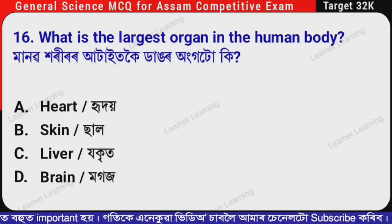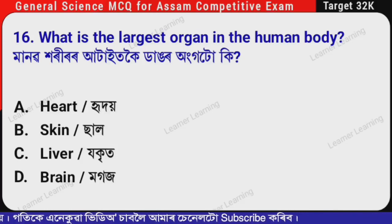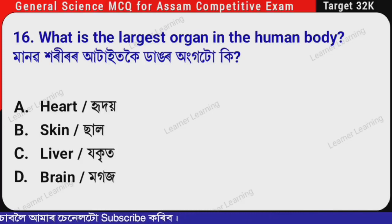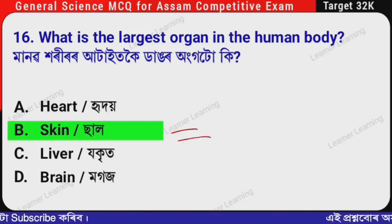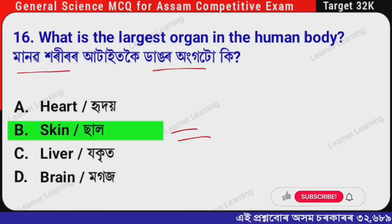Next question: What is the largest organ in the human body? (Assamese: Manophori rar attack kooyi dangor ongota ki?) The correct option is Option B — Skin (sal). The skin is the largest organ in the human body.